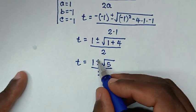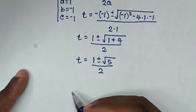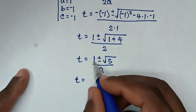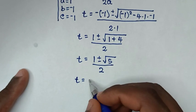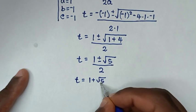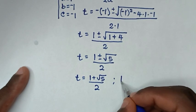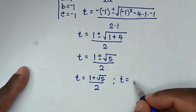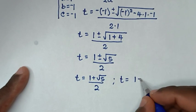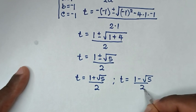From here we have two solutions because of the plus or minus. The first solution is t equals 1 plus square root of 5, over 2. And the second solution is t equals 1 minus square root of 5, over 2.